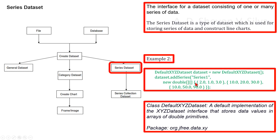If a series with the same key already exists, it replaces the data for that series. Then it sends a dataset change event to all registered listeners.